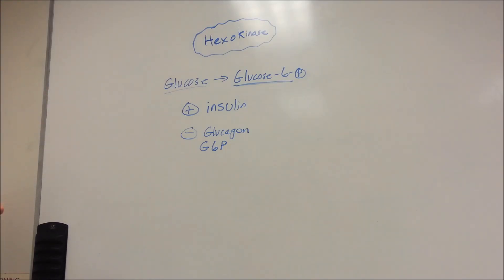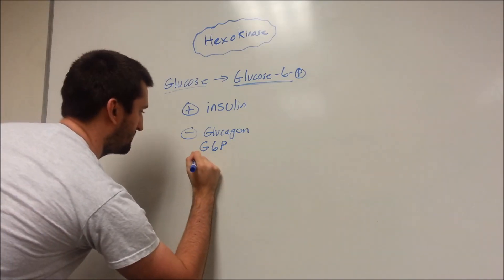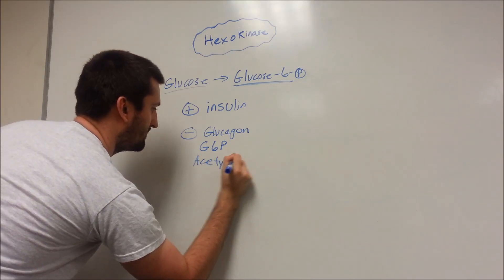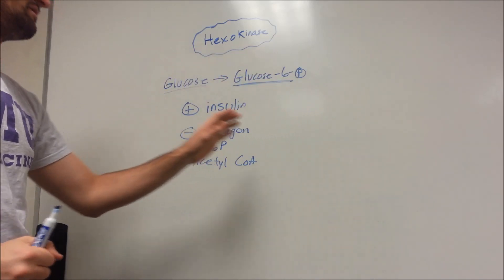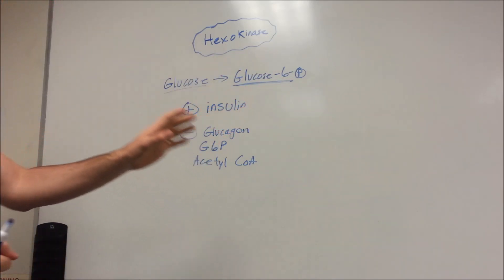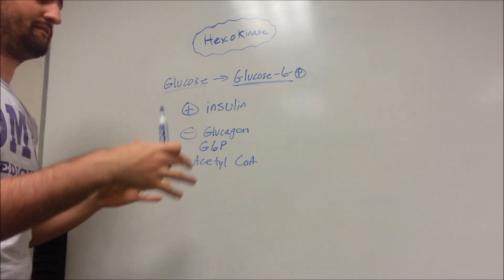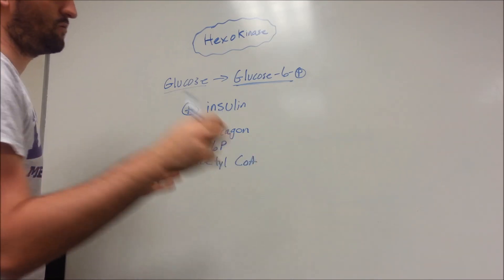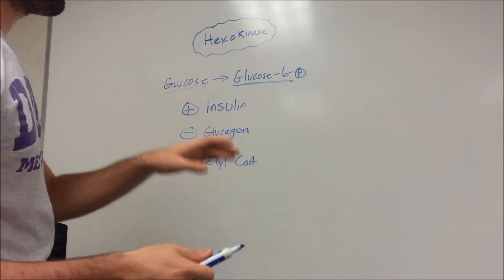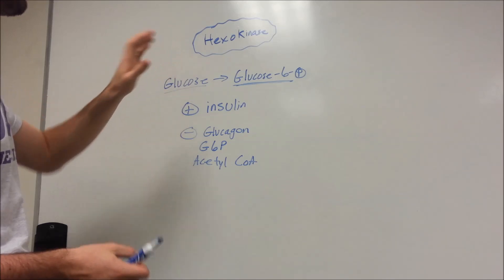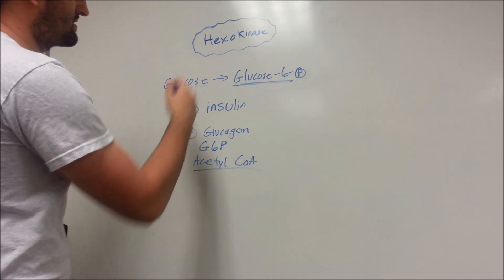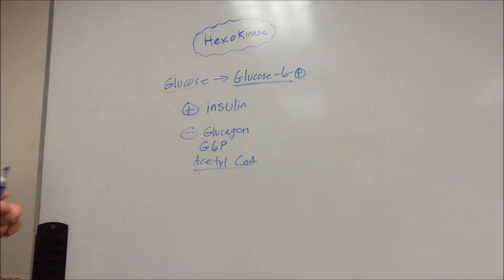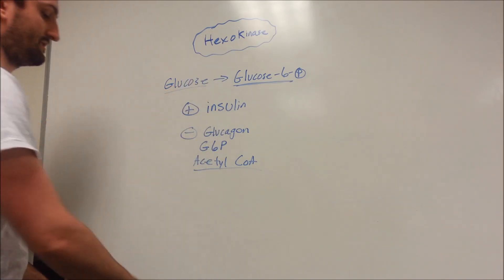Finally, acetyl-CoA. Acetyl-CoA is a factor further down the road, past glycolysis. When you have a buildup of that product, it signals the very first enzyme in the pathway to hold up — we need to catch up. So acetyl-CoA is also going to negatively impact hexokinase, slowing down that reaction to glucose-6-phosphate.